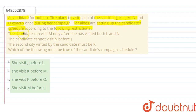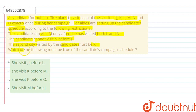The candidate can visit M only after she has visited both L and N. The candidate cannot visit M before J. The second city visited by the candidate must be K. Which of the following must be true of the candidate's campaign schedule?